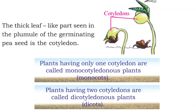The cotyledon is the thick leaf-like part seen in the plumule. Based on the cotyledon, there are two types of plants. The first type is monocotyledons — plants having only one cotyledon are called monocotyledon plants, also called monocots. The second type is dicotyledons — plants having two cotyledons are called dicotyledon plants, also called dicots.